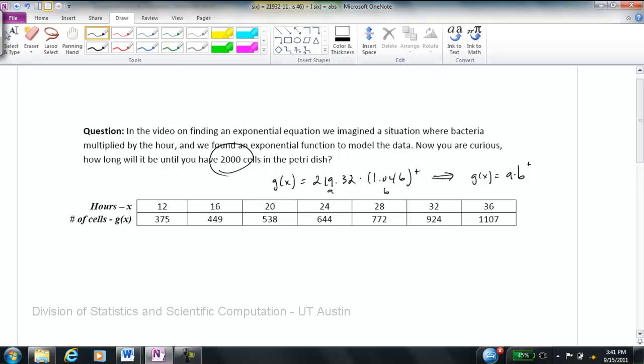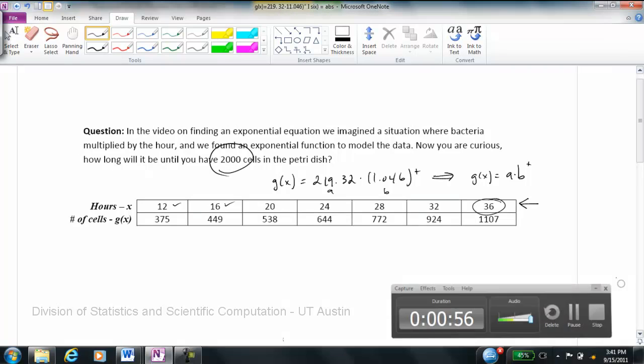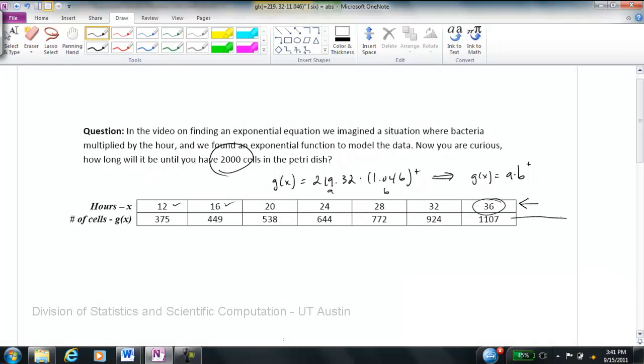So we want to know, we have these times here, 12, 16, 20, 24, all the way up to 36 hours. But we're curious. At what point are we going to see 2,000 bacteria cells?